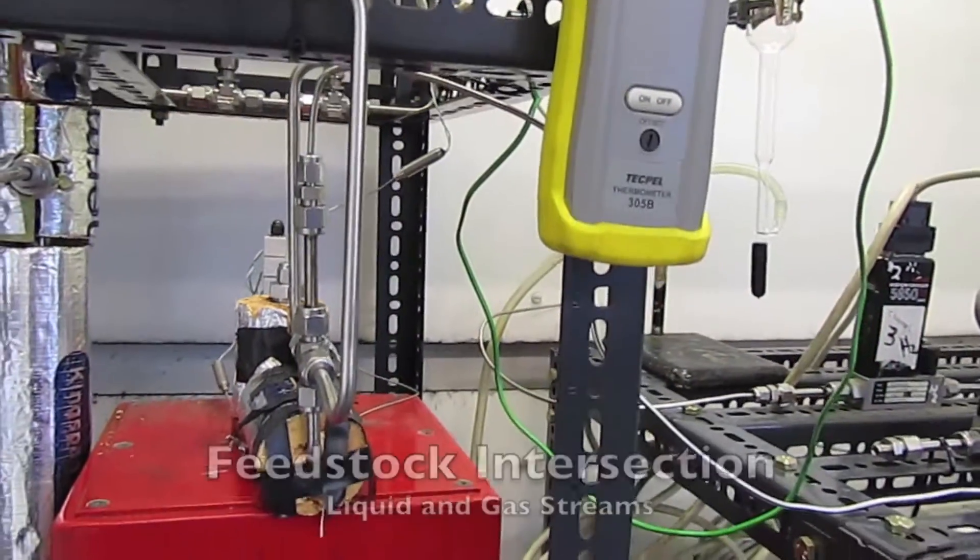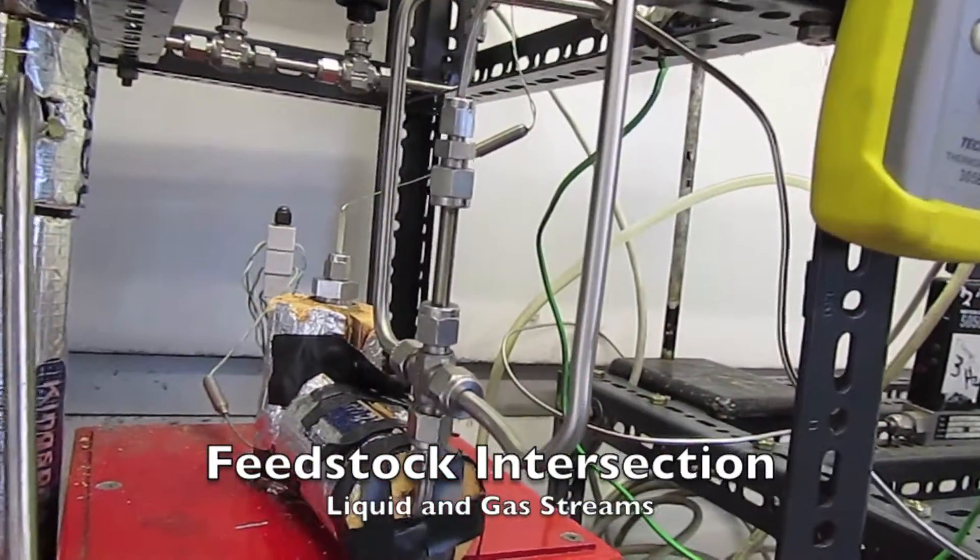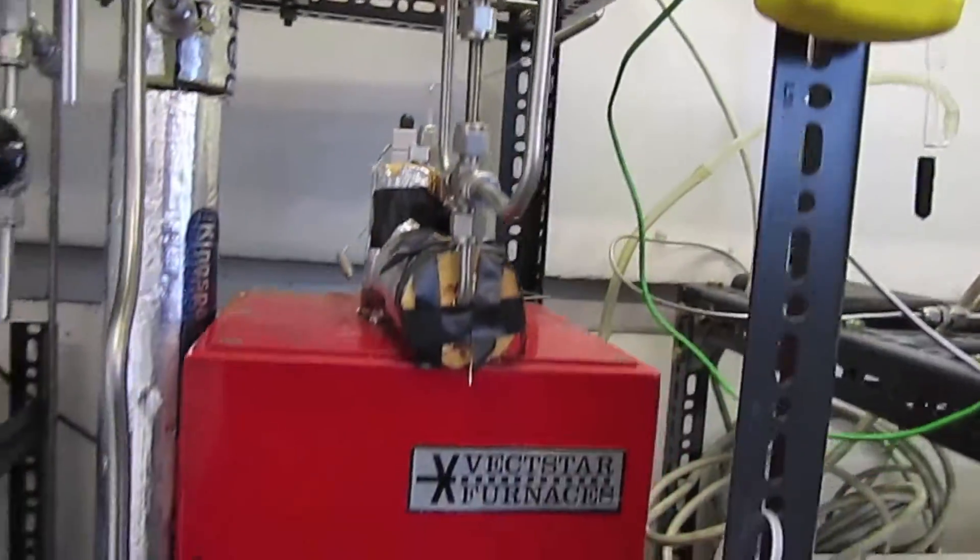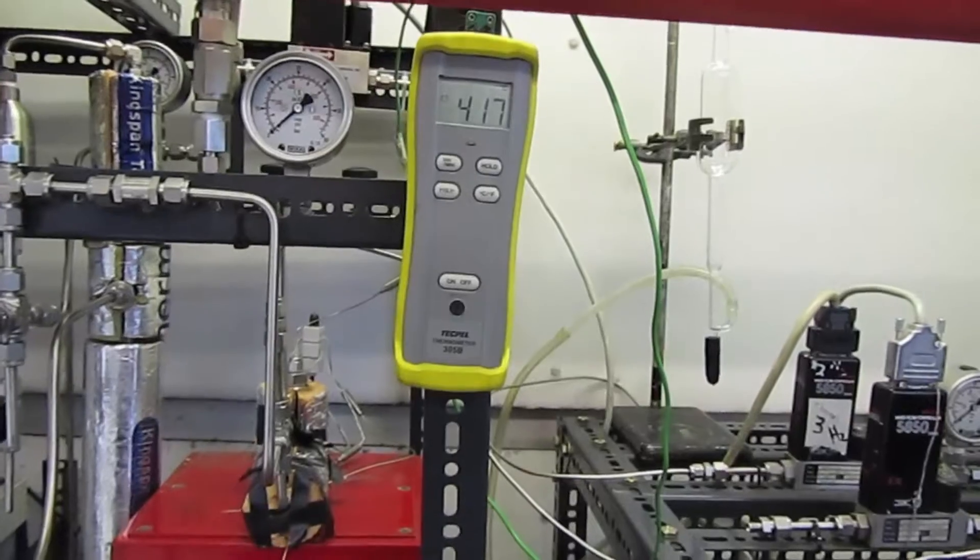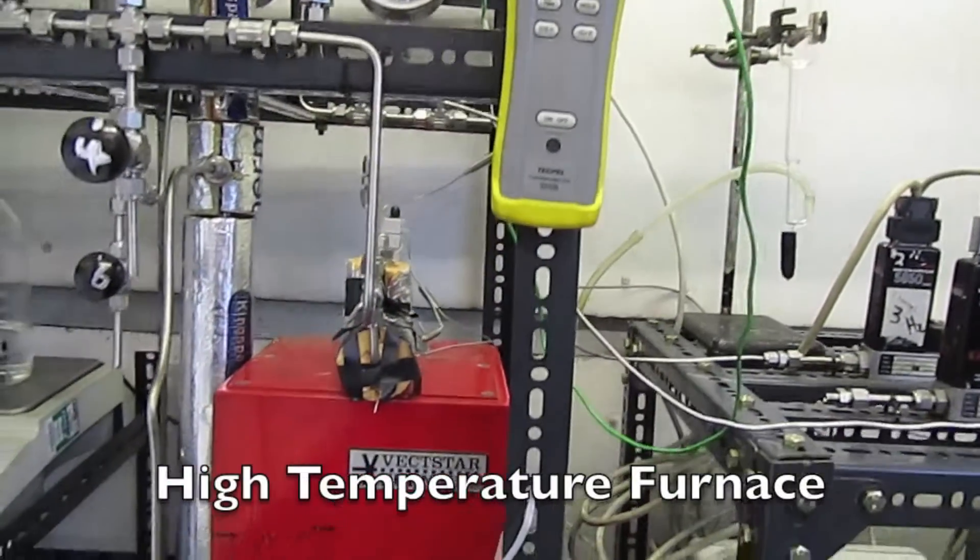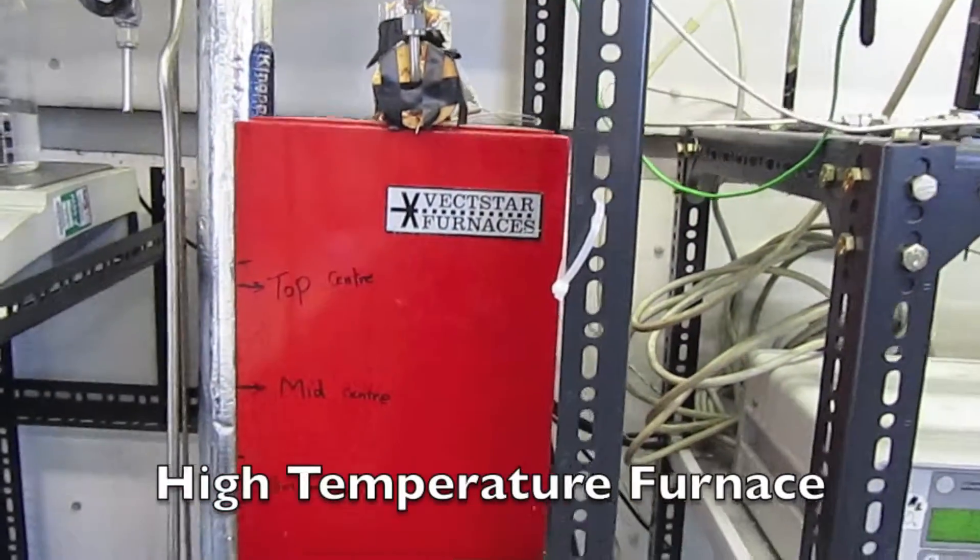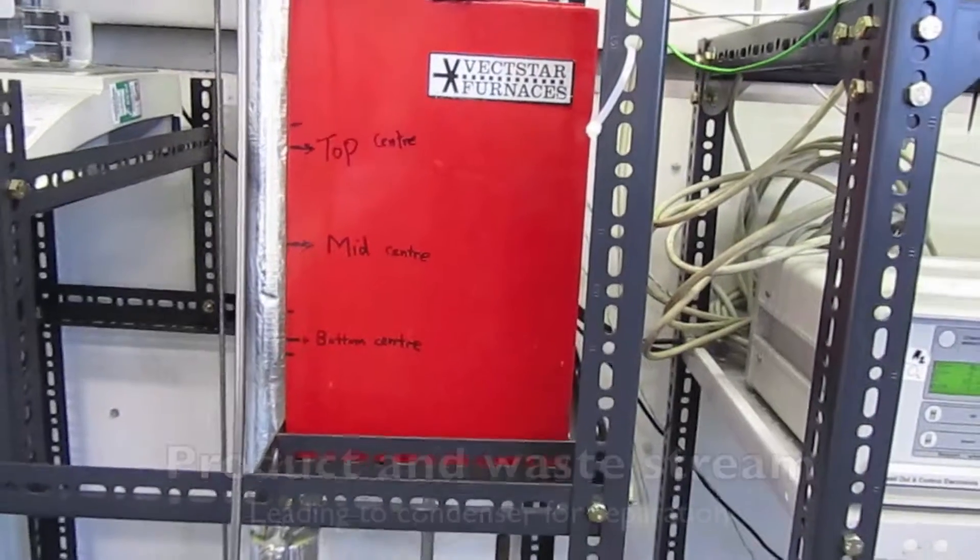Gas and liquid streams are mixed prior to entering the top of the reactor tube at this feedstock intersection, and the furnace is divided into three thermal zones in order to maintain a uniform temperature profile inside the reactor tube. The reactor tube runs down the centre of the furnace.